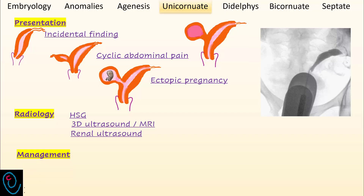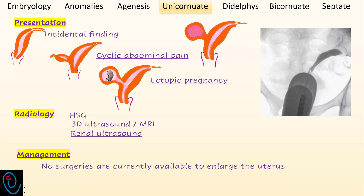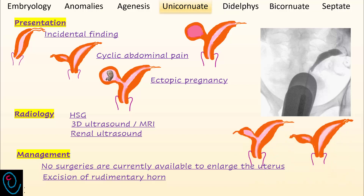Regarding management, no surgeries are currently available to elongate the unicornuate uterine cavity. Excision of a cavitary rudimentary horn is indicated because of the high maternal mortality and morbidity secondary to intraperitoneal hemorrhage.